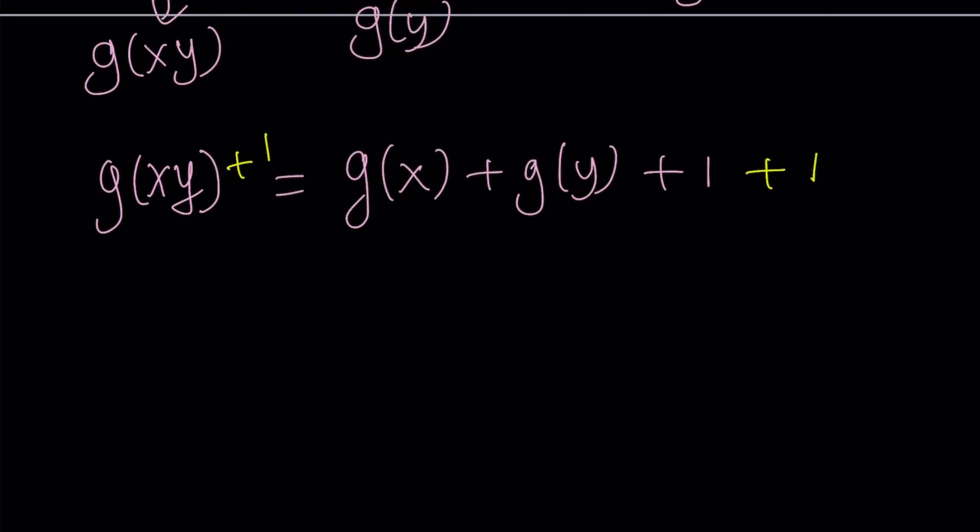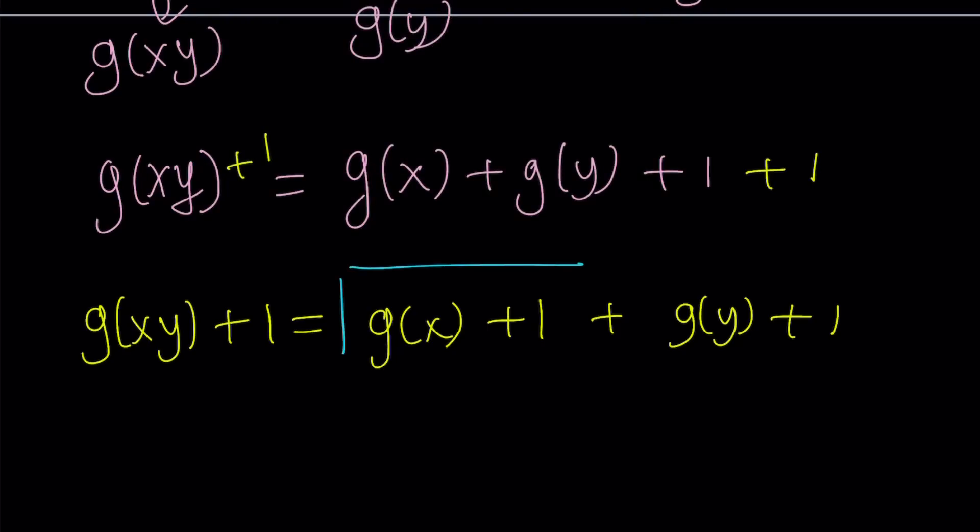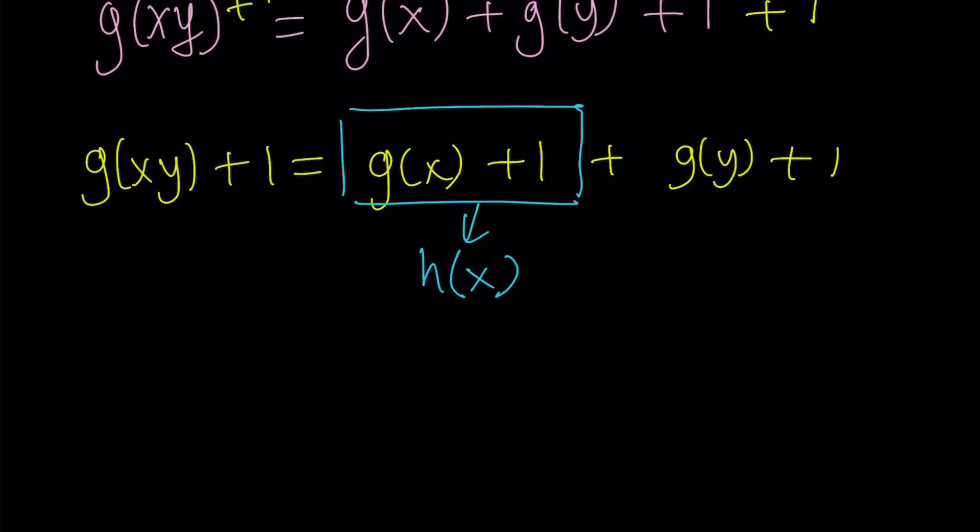And then write our function this way. g of x plus 1 plus g of y plus 1. Did I tell you substitution is awesome? Yes. Now we're gonna use it one more time. How about calling this h of x? h is another friend. Good friend. So from here we get h of x, y, h of y. Everything falls into place.